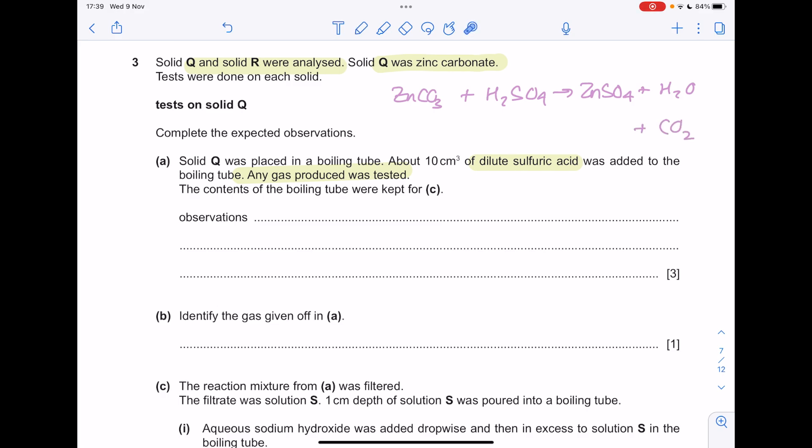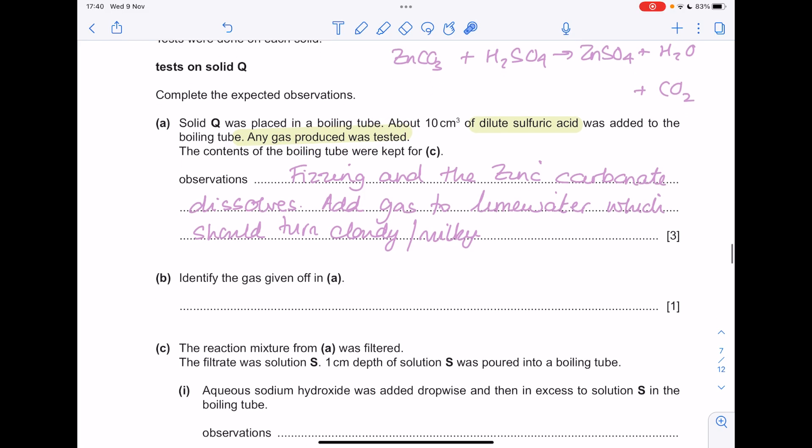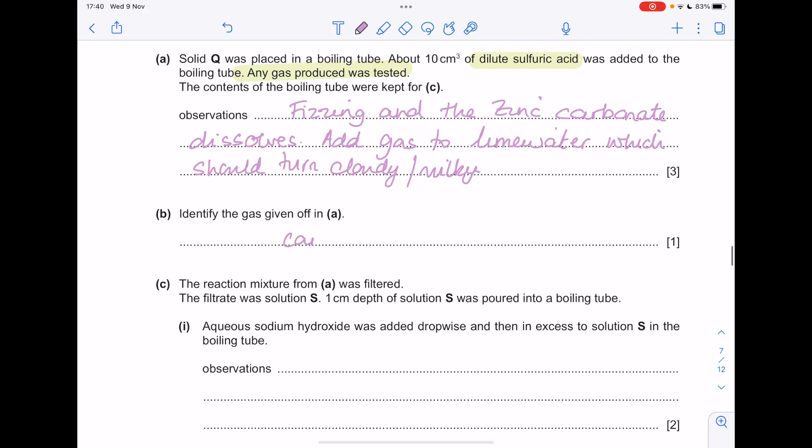So what would you expect to happen? Well, first of all, there'd be fizzing due to the carbon dioxide being given off. And the zinc carbonate would dissolve or get smaller. But what tests do we need to prove that it is carbon dioxide? Well, you'd add gas to lime water or bubble over. That would probably make more sense. Which should turn milky. And they have explicitly mentioned that they want a test here. So what is that gas? Well, we've already mentioned it several times. It's carbon dioxide.